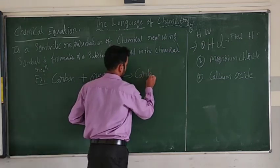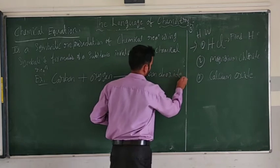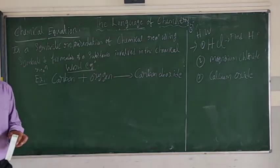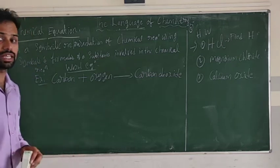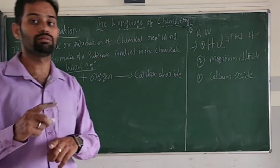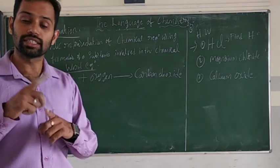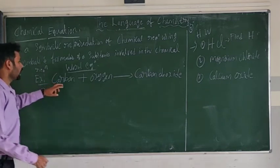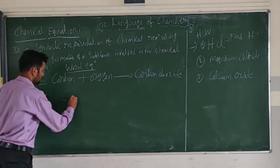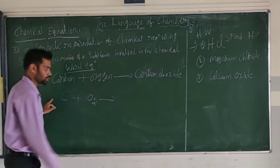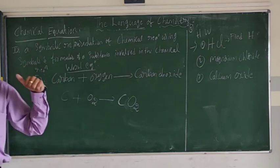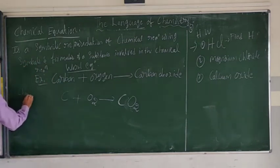For example: carbon burns with oxygen gives carbon dioxide. This is the word equation. The chemical equation represents it using symbols: C + O2 → CO2. This is the symbolic representation using chemical formulas.